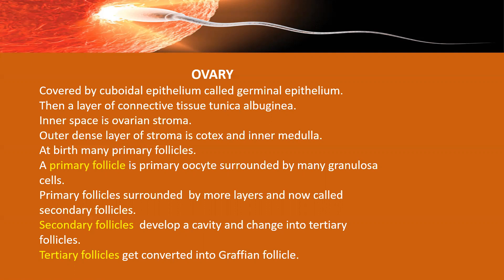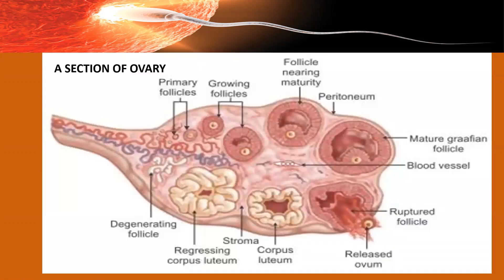A primary follicle consists of a primary oocyte surrounded by many granulosa cells, which are also known as follicular cells. In the primary follicle, you can see the oocyte at the center, surrounded by follicle cells. As these follicles mature, they get surrounded by many other layers of granulosa cells, and the primary follicles get changed into secondary follicles.